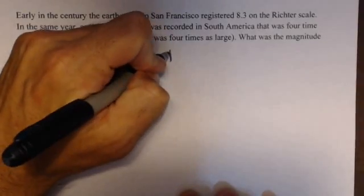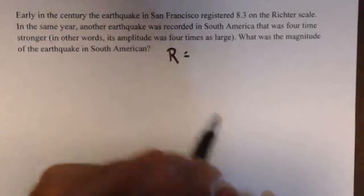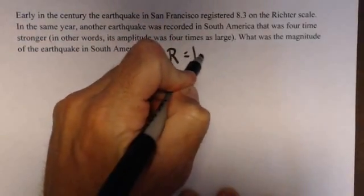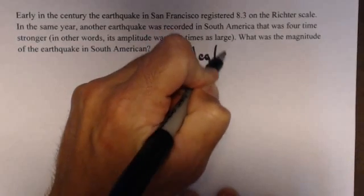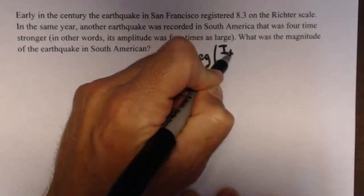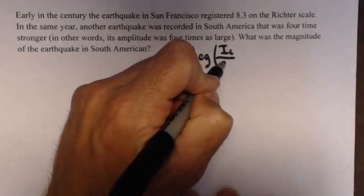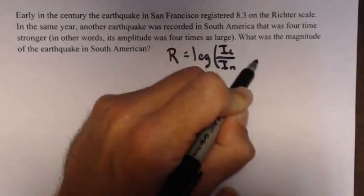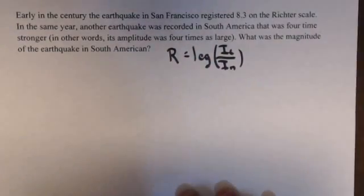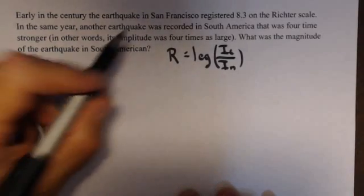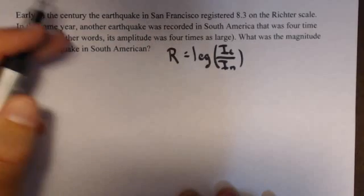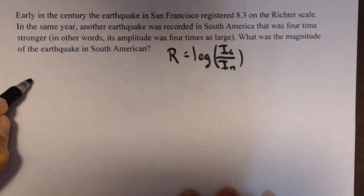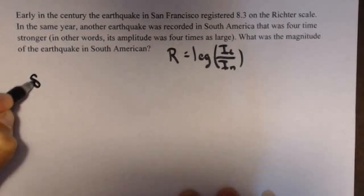Well, first, let's recall our formula, and that's that the Richter scale is given by the log of the intensity of the earthquake, I_c, over the intensity on a normal day, I_n. What we're going to do is set up one of these for each city. So San Francisco, it measured 8.3 on the Richter scale, so that's our R, and that's equal to the log of the intensity I_SF for San Francisco over I_n.